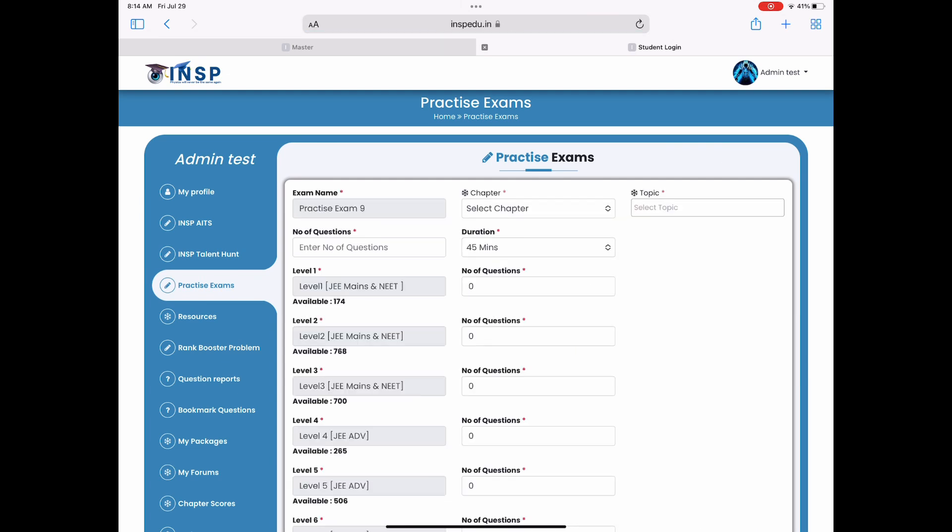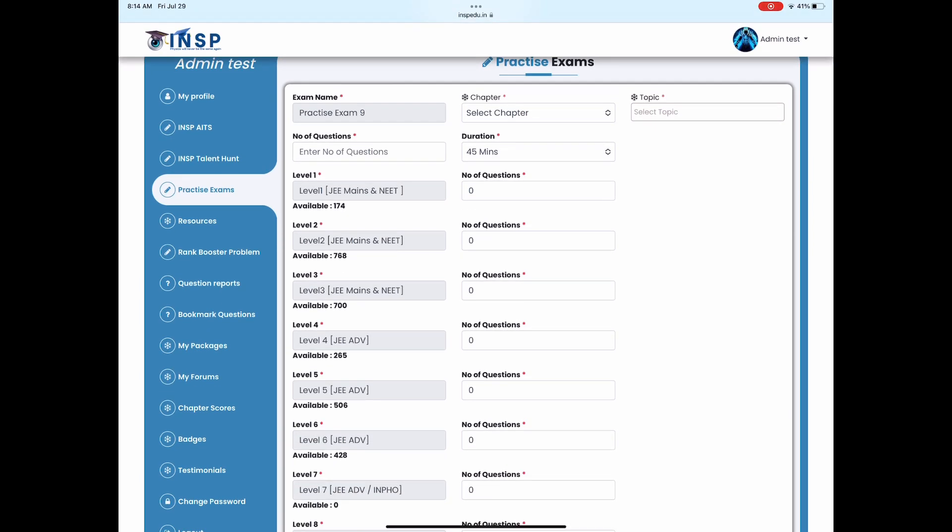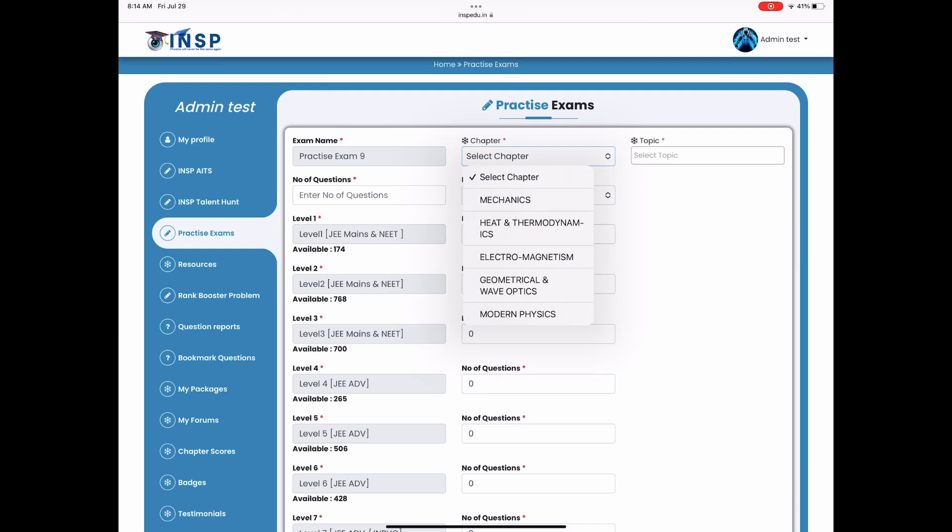Top right corner when you click, this is how practice exam will open, and here you can select any chapter. These are the number of available questions, different levels, level 1 to level 10.